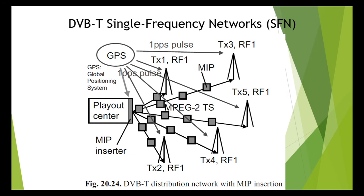The 1 PPS signal of the GPS satellites is also used for synchronizing the timing of DVB-T modulators. Look at figure number 24. In the case of a single frequency network, there is a professional GPS receiver outputting both the 10 MHz reference signal and the 1 PPS time signal at every transmitter site and at the play-out center where the multiplex stream is assembled.